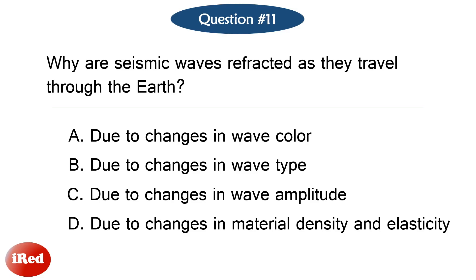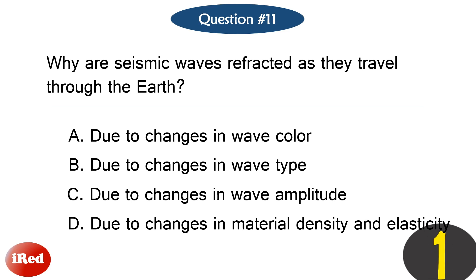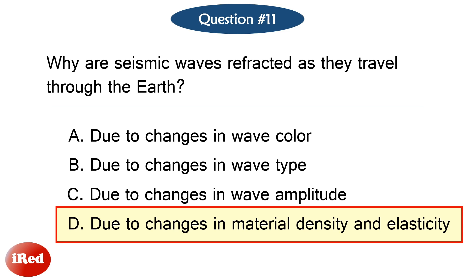Question number eleven. Why are seismic waves refracted as they travel through the earth? The correct answer is letter D, due to changes in material density and elasticity.